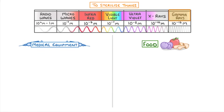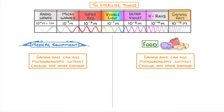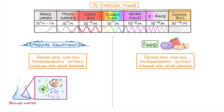The reason gamma rays are so useful for sterilisation is that they can kill microorganisms without causing any other damage. For medical equipment, the other option would be to use boiling water to kill any harmful microbes at high temperatures. This works pretty well, but it can't be used all the time, because some materials like plastic might get damaged as they melt slightly. Gamma rays, though, don't do any damage at all, so there's no risk of damaging the equipment.